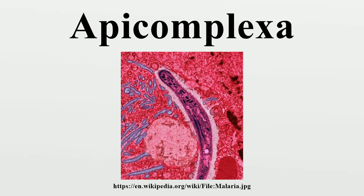Most of the Apicomplexa are immotile, however, by use of a gliding mechanism that uses adhesions and small static myosin motors. The other main lines were the Acetosporea, the Myxozoa, and the Microsporidia. Sometimes the name Sporozoa is taken as a synonym for the Apicomplexa, or occasionally as a subset.